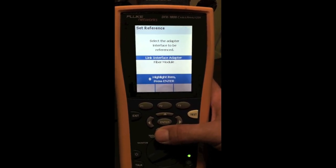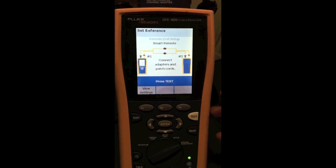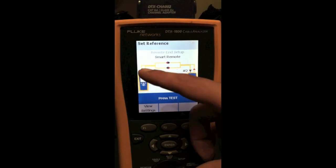So next thing we want to do is go swap over one more time to special functions and we're going to set our reference. And here you will see different settings for link interface adapter which we're not using and our fiber module which we are. Hit enter and it will give you a diagram on how to set up. You have your input going over into your input on the other side and your output again going to your output on the other side. So now we're going to take these cables and couple them together and establish a link.